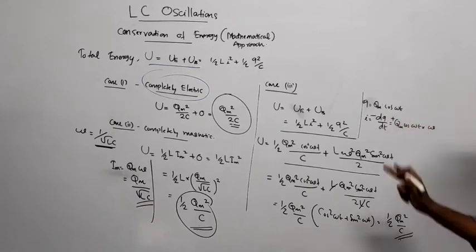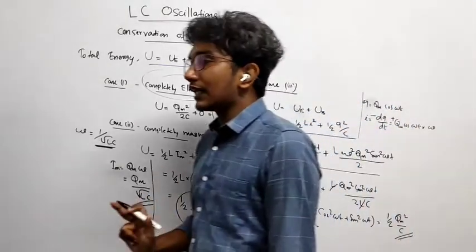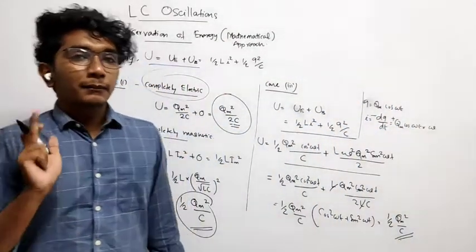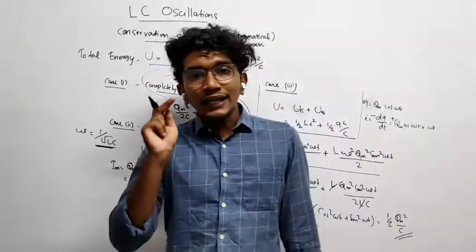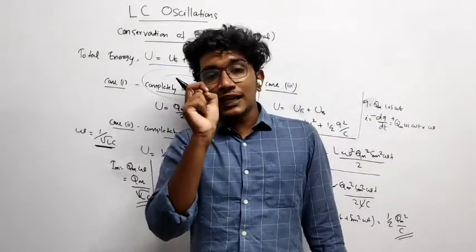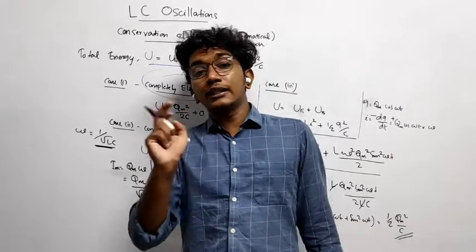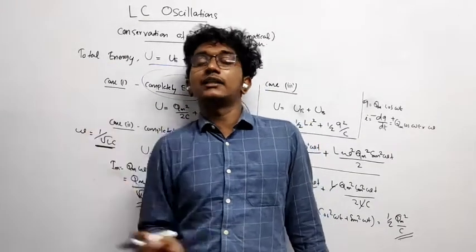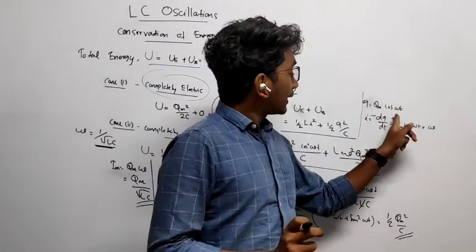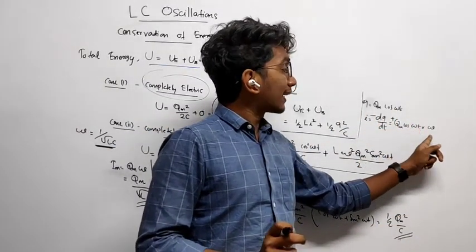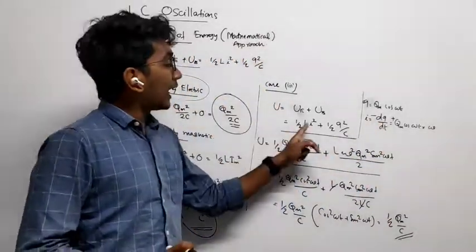So I is equal to minus dQ by dt. There is one question, why minus sign over there? Because we have studied that I is equal to dQ by dt. While current is increasing, the charge is actually decreasing. It is discharging. It is actually discharging that leads to the current. That is why the minus sign. So minus Qm cosine omega t into omega, that is what is I. So we got I and Q.